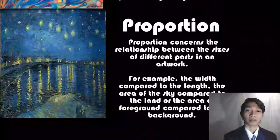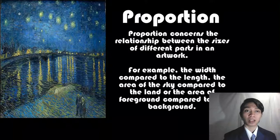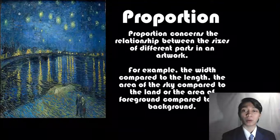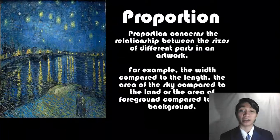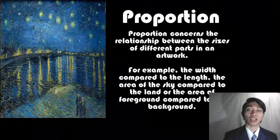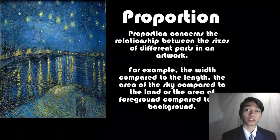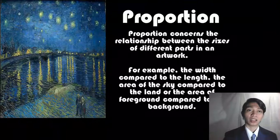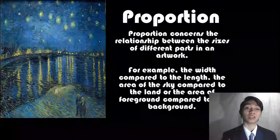Next we have proportion. Proportion is how shapes and design are shown. It concerns the relationship between the sizes of different parts in an artwork — for example, the width compared to the length, the area of the sky compared to the land, or the foreground compared to the background. If the painting is not in proportion, it loses the balance form between the background and foreground, and the shape and size of the imagery shown.